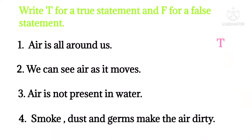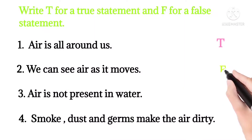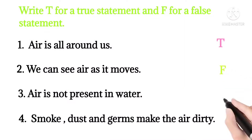Now write T for true statements and F for false statements. Statement 1: Air is all around us — true. Statement 2: We cannot see air, but we can feel it — true. Statement 3: We can see air as it moves — false, because we can only feel air when it moves.